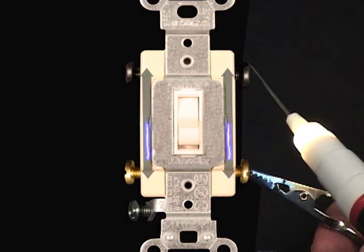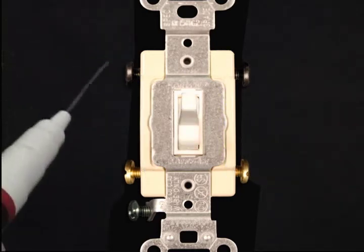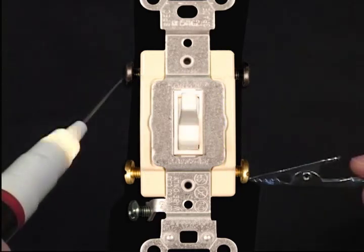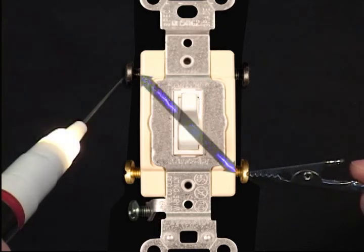When we put the switch in the up position, the switch criss-crosses the current's flow. Now the switch is allowing current to flow between the upper left black terminal and the lower right brass terminal.